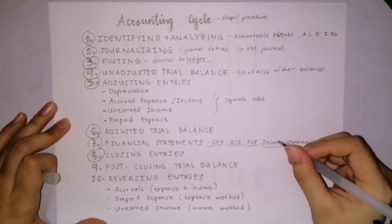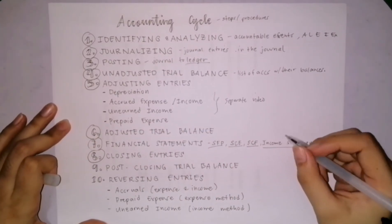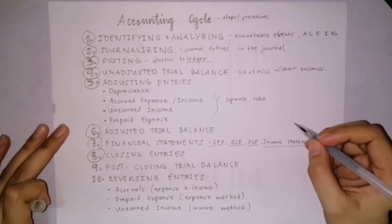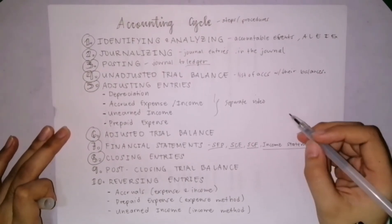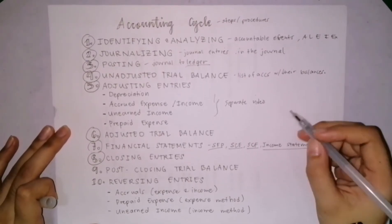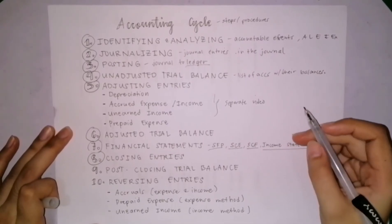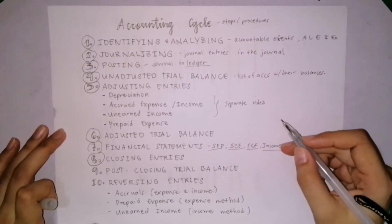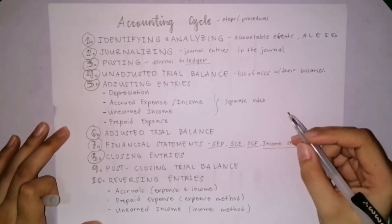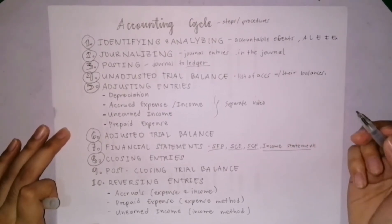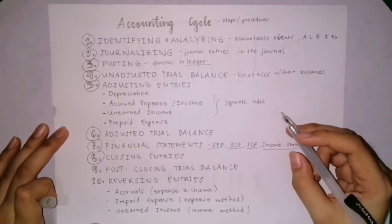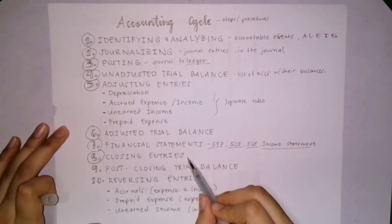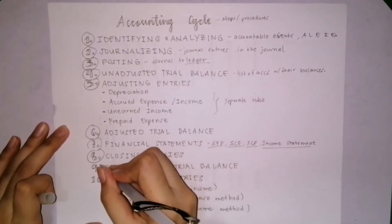Next is closing entries. Here, we close all the nominal accounts. Temporary or nominal accounts are accounts related to income and expense. In closing entries, all income and expense accounts are zeroed out. So after closing entries, the balance of income and expense accounts is zero.